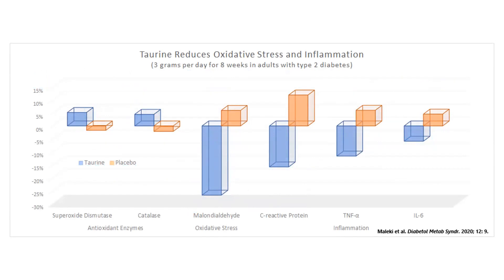Several clinical trials have shown that supplementing with three grams of taurine per day reduces biomarkers of oxidative stress and inflammation in those with metabolic dysfunction. In the shown study, as an example, oxidative stress was reduced by 27% and markers of inflammation were reduced by 6% to 16% compared to increases in the placebo group.